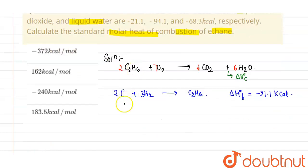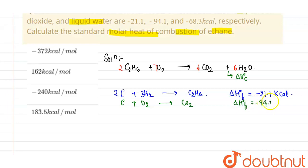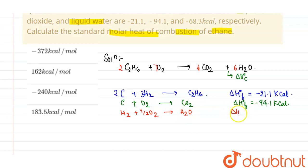Now, the standard molar heat of formation of carbon dioxide is given. So it will be C plus O2 giving CO2, and this standard molar heat of formation is given as minus 94.1 kilocalories. The third one is for liquid water: H2 plus half O2 gives H2O, and this standard heat of formation is given as minus 68.3 kilocalories.